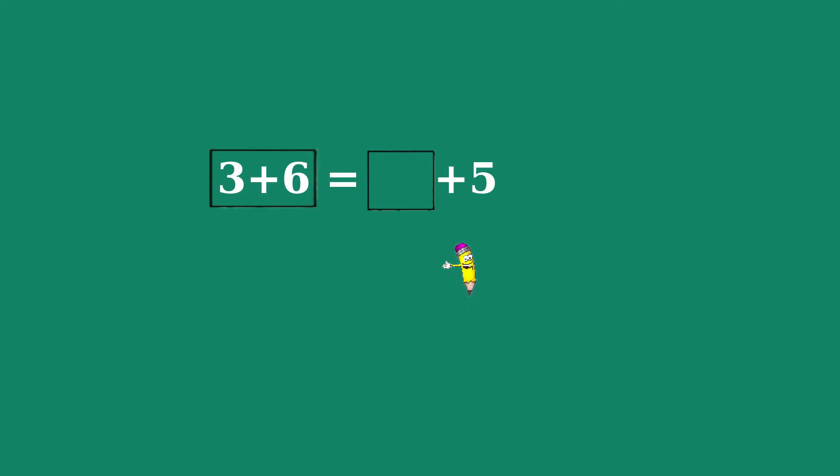On the first side, the 3 plus 6 equals 9. On the other side, we have something plus 5 has to equal 9. 4 plus 5 equals 9. Placing the 4 in the original equation solves it.